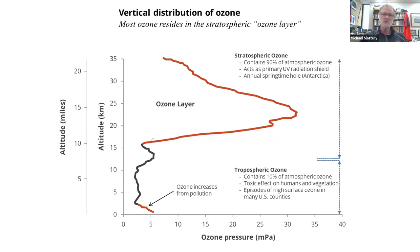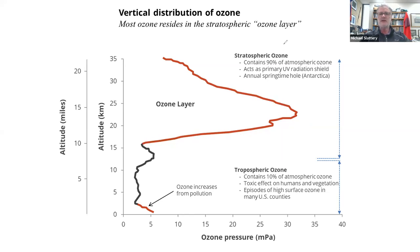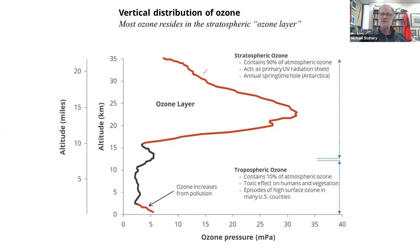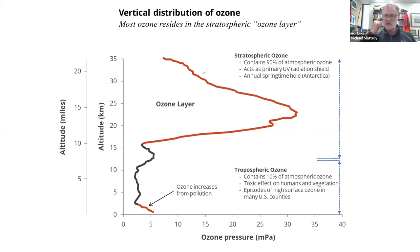Ozone is concentrated at the surface, decreases rapidly up to about two to three kilometers, and is fairly well mixed until you reach the stratosphere — beyond where airplanes fly. Here, at about 10 to 15 miles, ozone increases and reaches a maximum concentration at about 15 miles or 20 to 22 kilometers, then decreases from there. This layer contains about 90% of the atmosphere's ozone — the stratospheric ozone — and acts as a very important shield to harmful ultraviolet radiation.